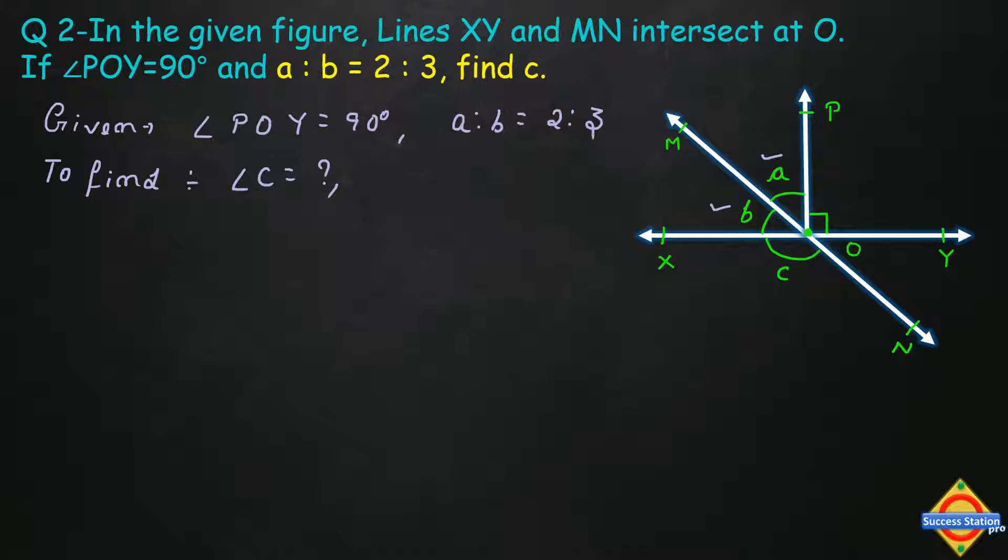Now, angle POY has a value of 90 degrees. Look at the XY line - this is a straight angle formed over the line, so the total angle value will be equal to 180 degrees.